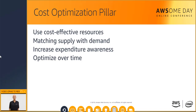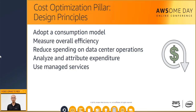Finally, in AWS you can optimize over time with all of the tools and different approaches — you can measure, monitor, and improve your architecture from the data you collected in the AWS platform. Adopt a consumption model: you pay only for the computing resources you use, and then increase or decrease depending on business requirements, essentially trading CAPEX for OPEX. The next principle is to measure overall efficiency — measure the business output of your systems and the costs associated with delivering it, then use this measurement to understand how gains are made from increasing output and reducing costs.